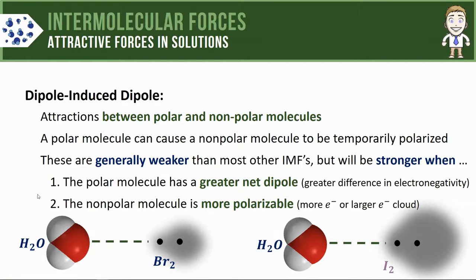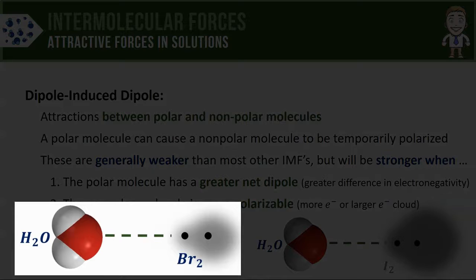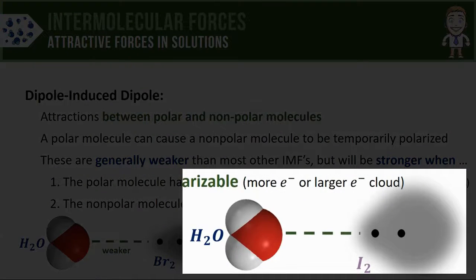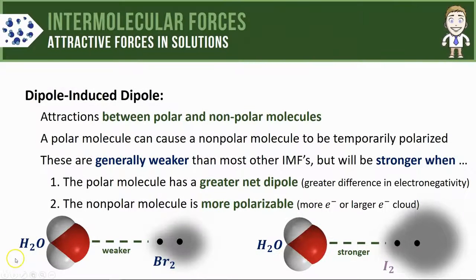Let's compare the dipole-induced dipole forces between water and bromine versus water and iodine. Since bromine has a smaller electron cloud, it is less polarizable, and that dipole-induced dipole force will be weaker. On the flip side, iodine has a very large electron cloud, so it's very polarizable, resulting in a stronger dipole-induced dipole force.